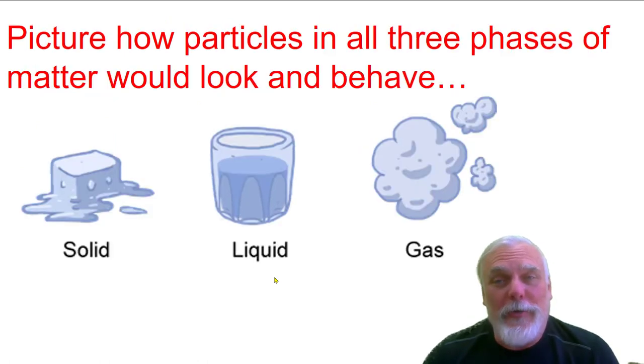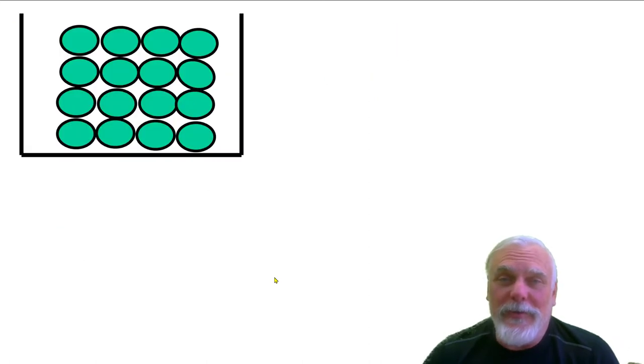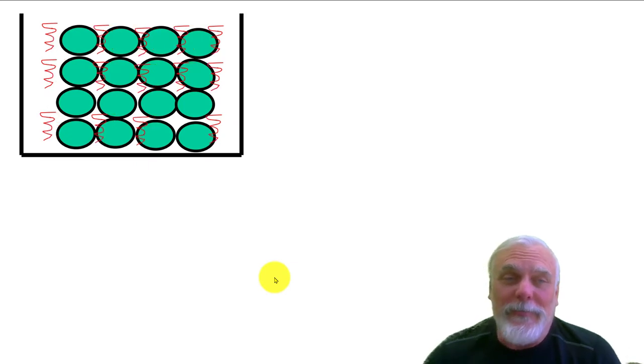Let's picture how particles in all three phases of matter would look and behave. This is solid. You see the particles in a solid are staying in the same position. They're vibrating in place. However, they're not changing position. They're staying in position relative to one another.